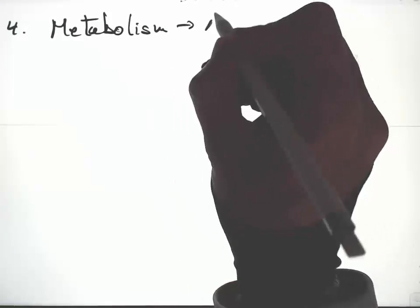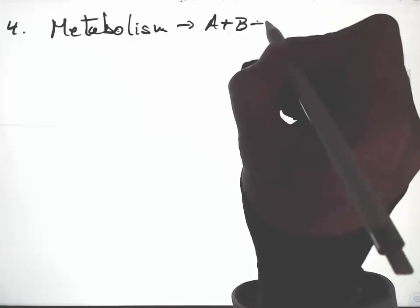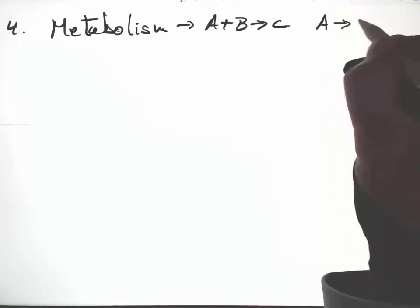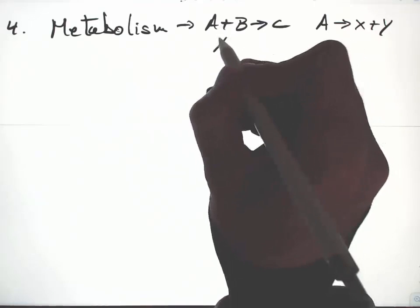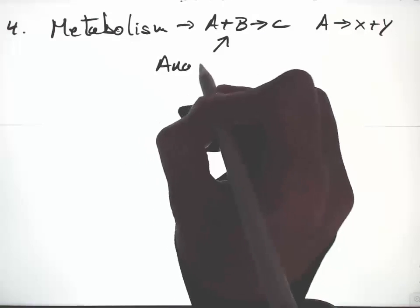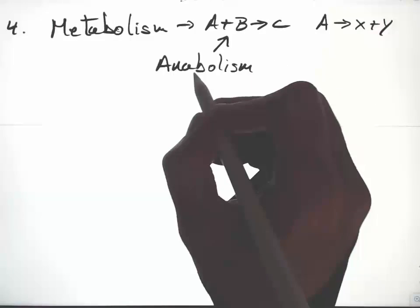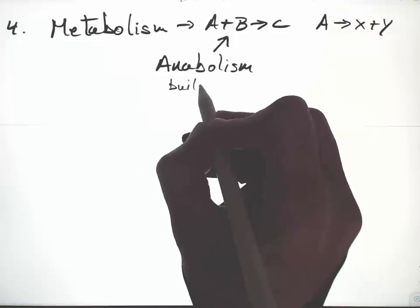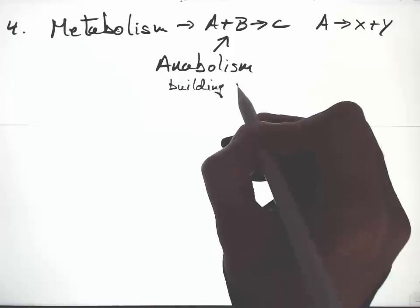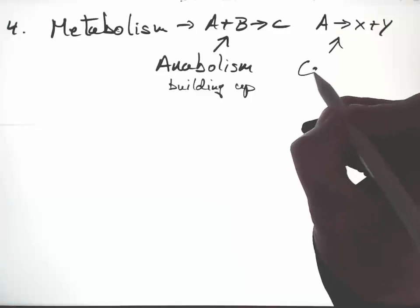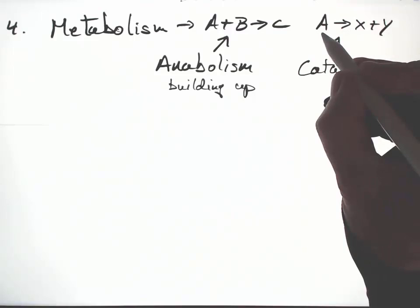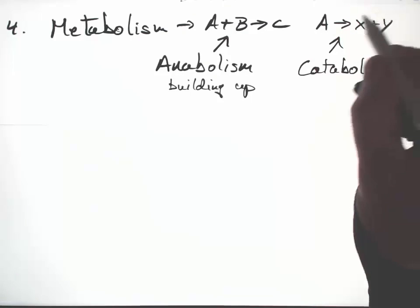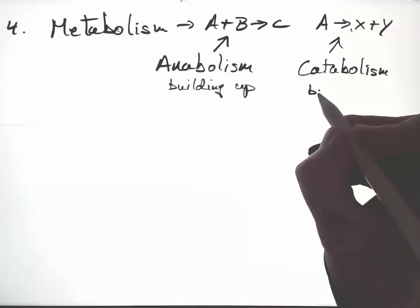Four, metabolism, is all the reactions that are taking place in an animal. We think of two different forms of chemical reactions, one in which small molecules are converted to larger ones, anabolism, or anabolic reactions building up, and catabolism, in which large molecules are converted to smaller ones breaking down.